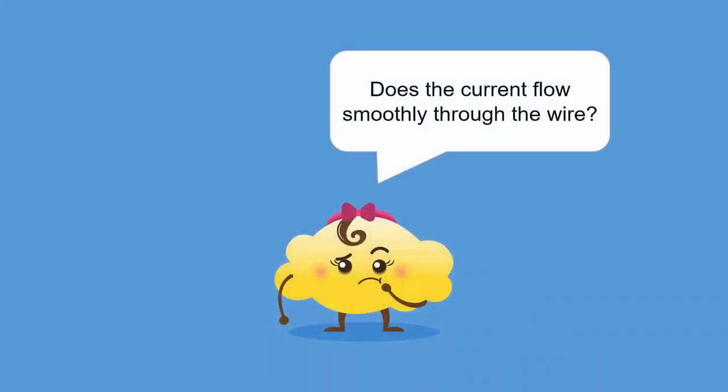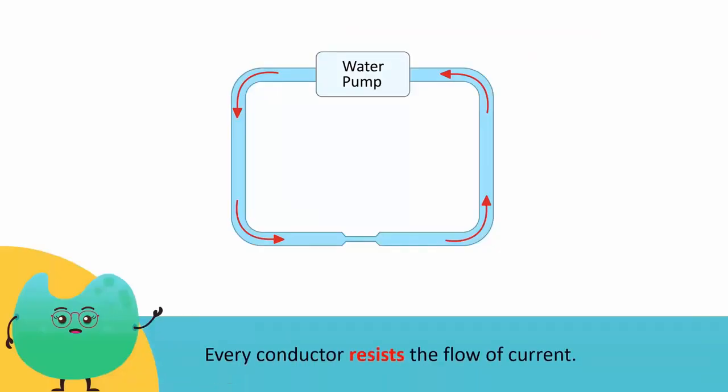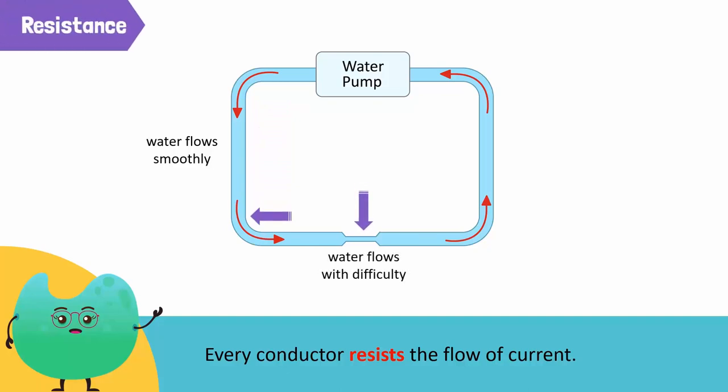Does the current flow smoothly through the wire? No. Every conductor resists the flow of current in some way, just like how some pipes allow water to flow more smoothly than others. This property is called resistance.